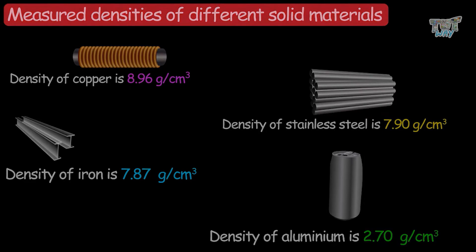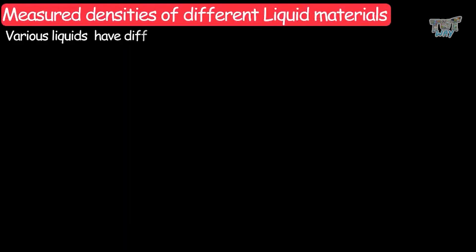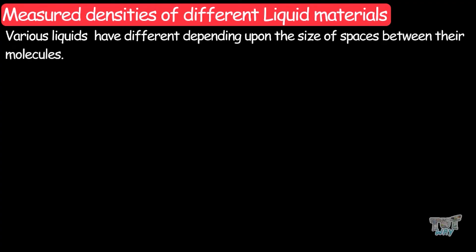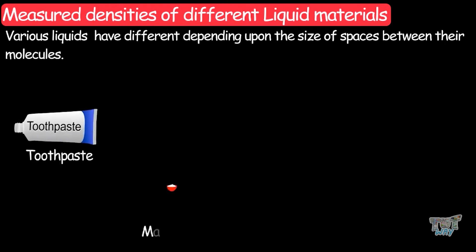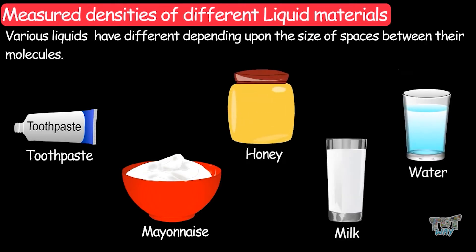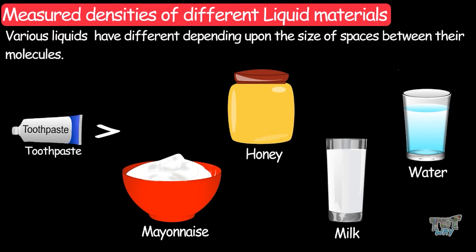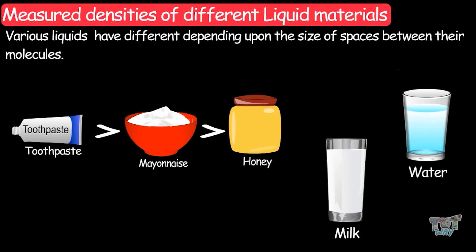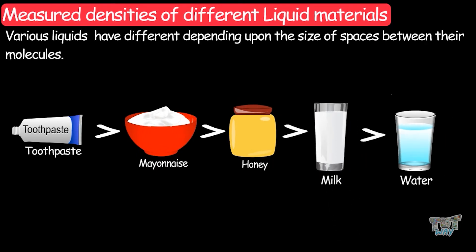Similarly, various liquids will have different densities depending upon the size of the spaces between their molecules. Consider these liquids: toothpaste, mayonnaise, honey, milk, and water — ranged from most dense to least dense. Toothpaste is the most dense, then mayo, then honey, then milk, and then water. Water is the least dense liquid among these.